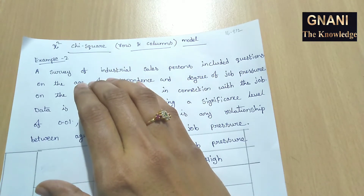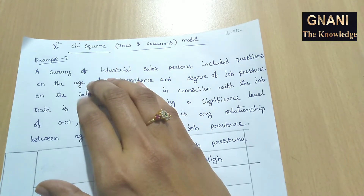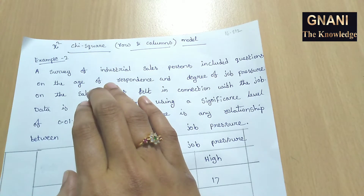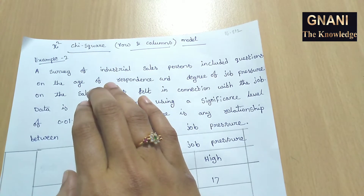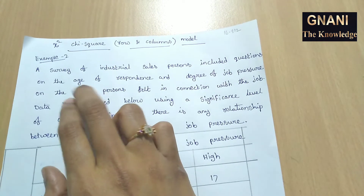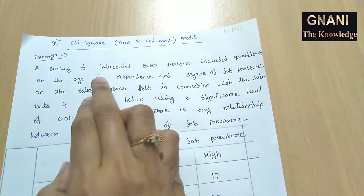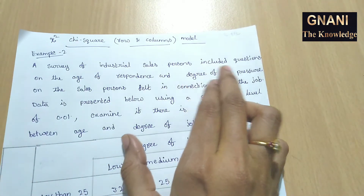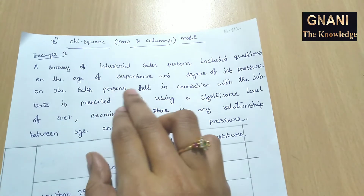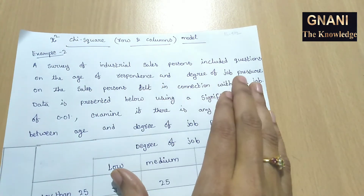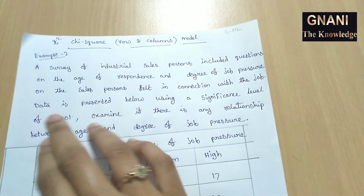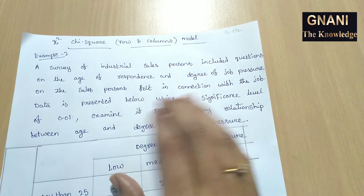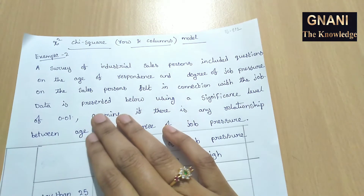I will leave the table value in the description. Because this model is very important, I will explain another example. Example 2: A survey of industrial salesperson included questions on the age of respondents and degree of job pressure the salesperson felt in connection with the job. Data is presented below.